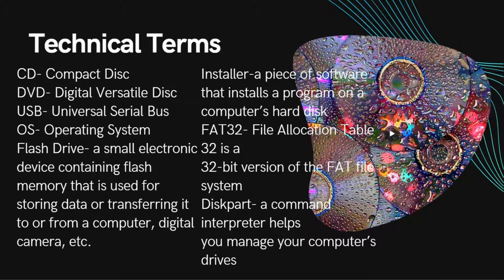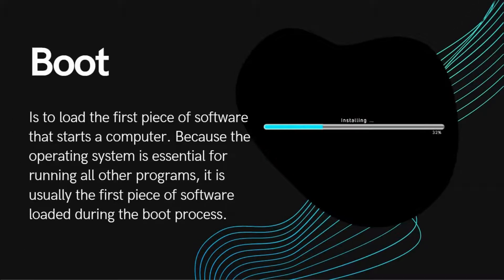Installer: a piece of software that installs a program onto a computer's hard disk. FAT32 (file allocation table 32): a 32-bit version of the FAT file system. Diskpart: a command interpreter that helps you manage your computer's drives. Boot: to load the first piece of software that starts a computer.